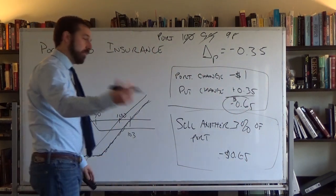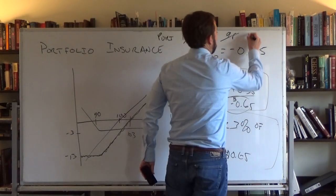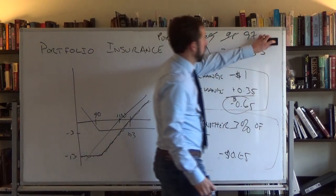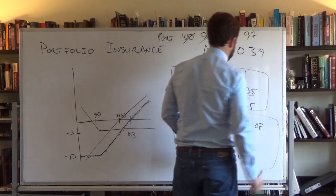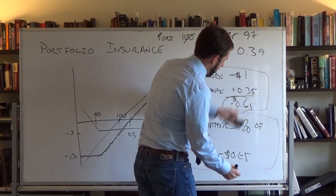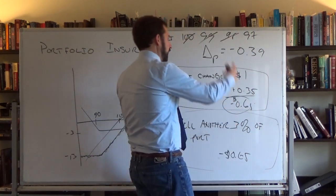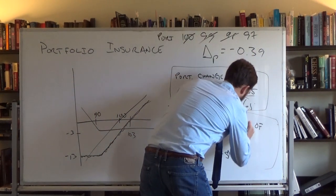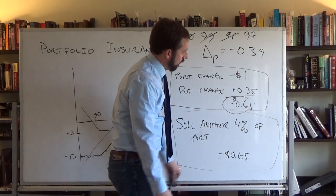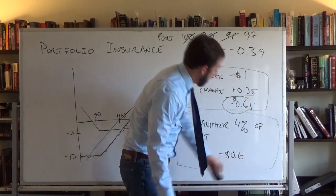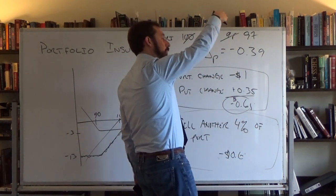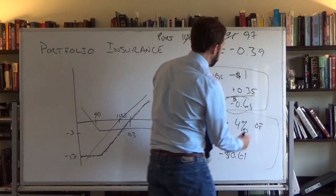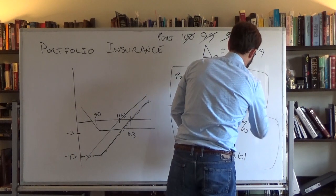Again, one more time: now the stock's at 97, maybe the delta goes to 0.39. So we have to sell 4% more of our portfolio — we're at 3.5, sell 4% more — so that we match. Now, if the portfolio goes down by a dollar, we will lose 61 cents.